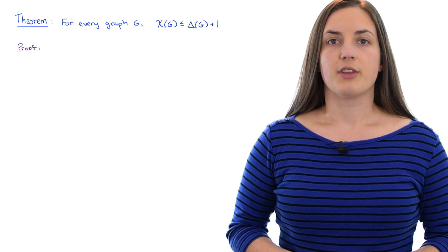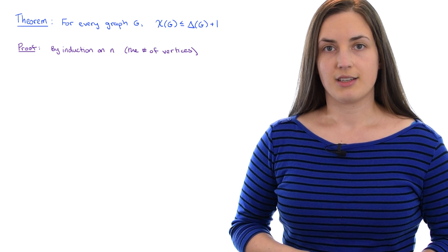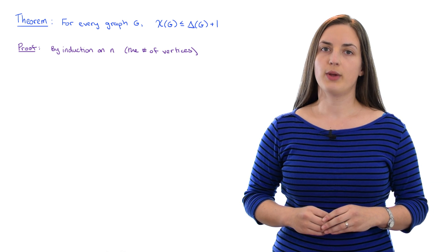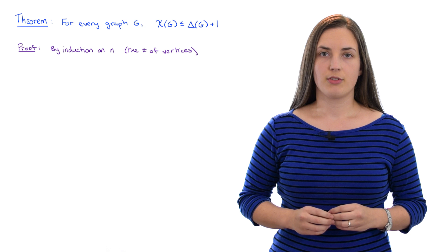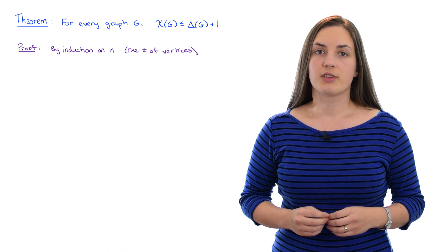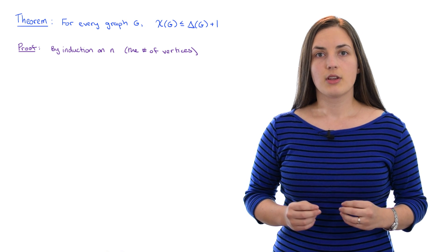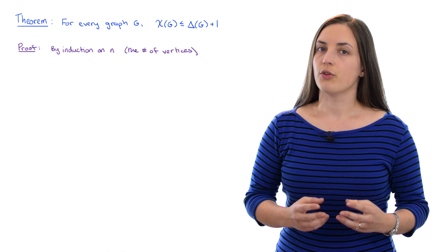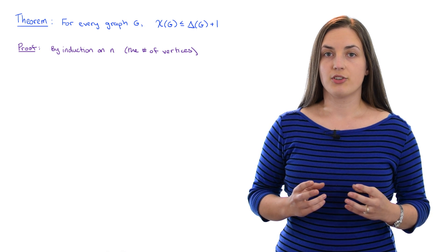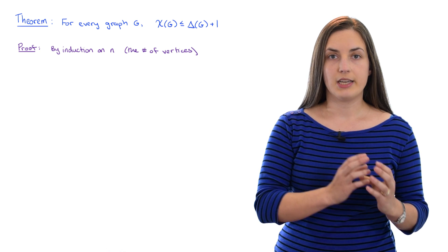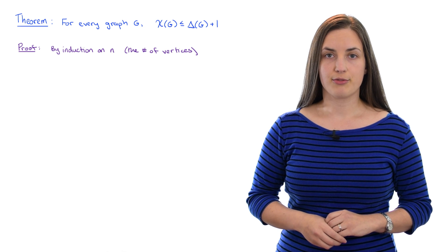We're going to prove this using induction on n, the number of vertices. Notice that we can assume that G is a connected graph — if we prove this theorem for all connected graphs then the theorem will also hold for disconnected graphs. All you would have to do is look at each of the connected components within your disconnected graph.